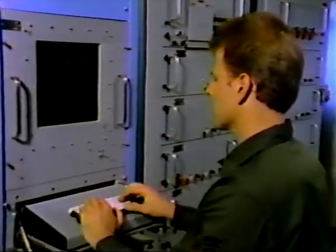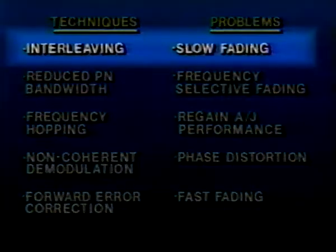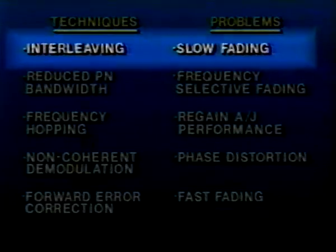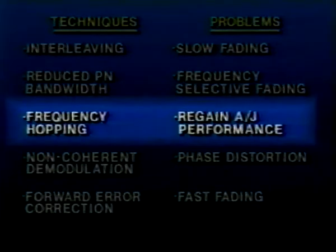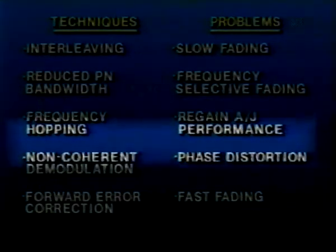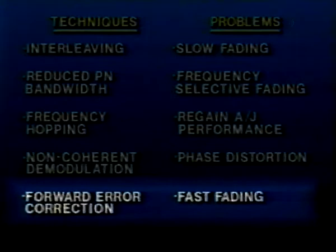The USC-28 uses several methods to overcome scintillation problems: interleaving for slow fading; reduced PN bandwidth for frequency selective fading; frequency hopping to regain performance; non-coherent demodulation for phase distortion; and forward error correction for fast fading.